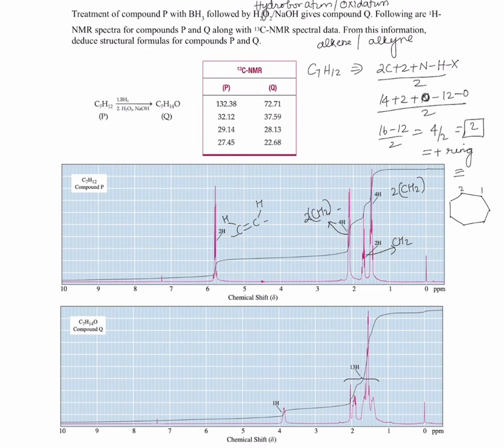So let's number this one, two, three, four, five, six, seven. And we also know that there is a double bond. So we'll put a double bond here. Now if you assume that this is going to be the structure of C7H12, let's see what's going to happen if it undergoes hydroboration followed by oxidation.